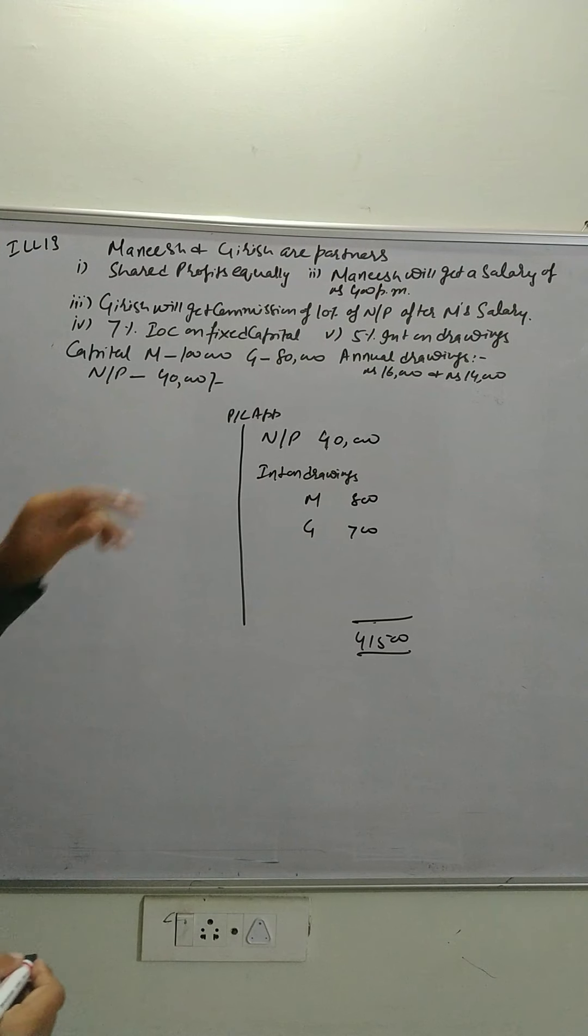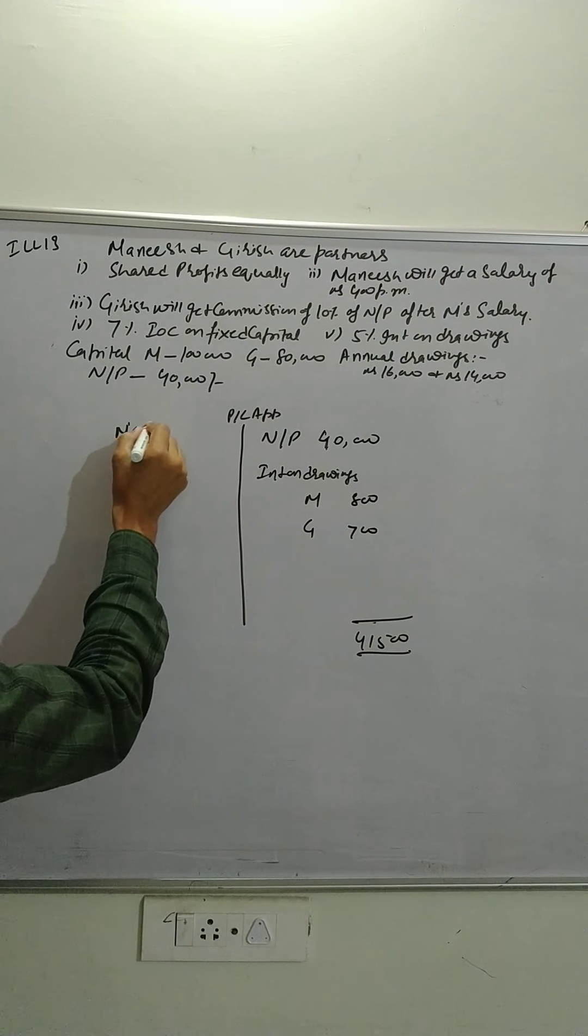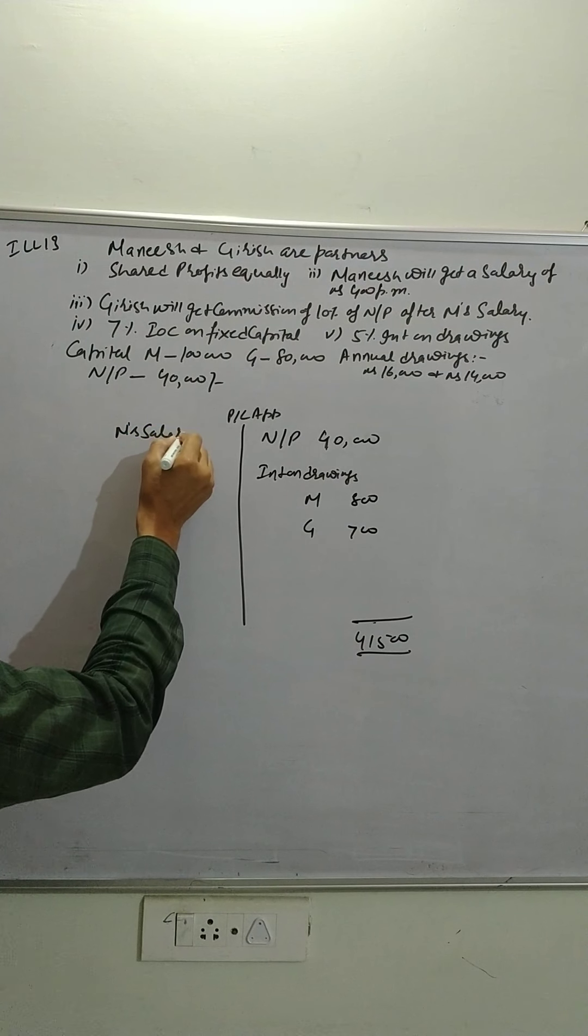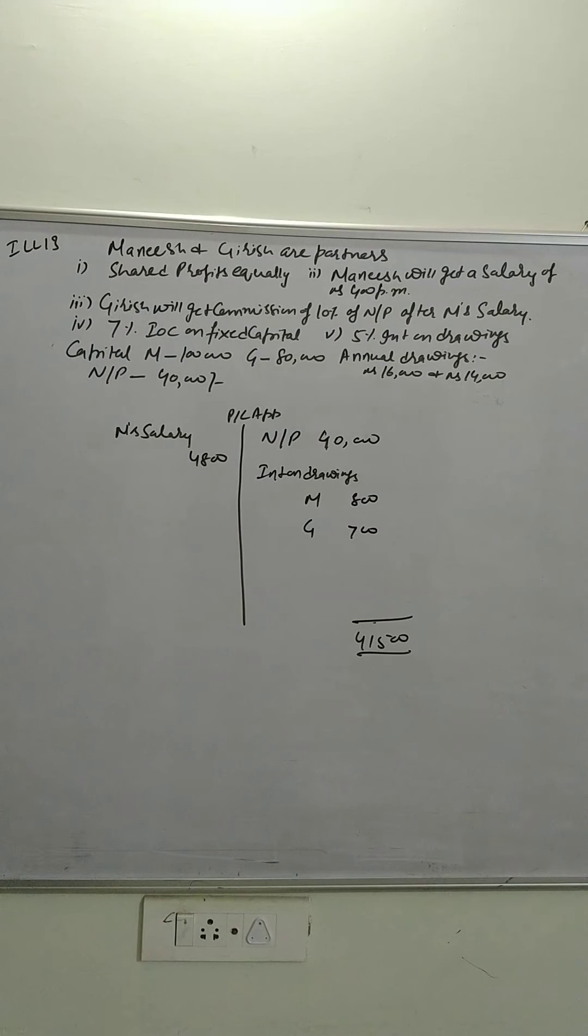Now coming over to this side. Manish will get a salary. M's salary that is 4,800 per annum. Per month is 400, times 12, that is 4,800.